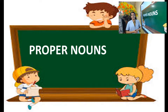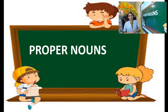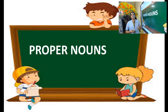Common noun is a name given in general to a person, place, thing, animal, etc. If I say a dog, it is a common noun. A man is a common noun. A boy, common noun. A girl, common noun. So a name given in general is a common noun. Then what is a proper noun?